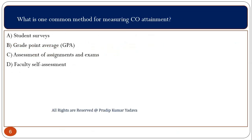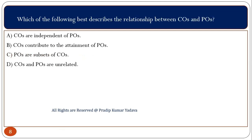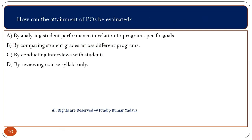The correct option focuses on the overall skill and knowledge students should gain by the end of the program, while CO focuses on what students should achieve in each course. What is one common method for measuring CO attainment? By doing assessment through assignment and exam we can measure CO attainment. Which of the following best describes the relationship between CO and PO? CO contributes to the attainment of POs — to get program attainment, you first have to gain the CO. How can the attainment of PO be evaluated? Option A is correct: by analyzing student performance in relation to program-specific goals.